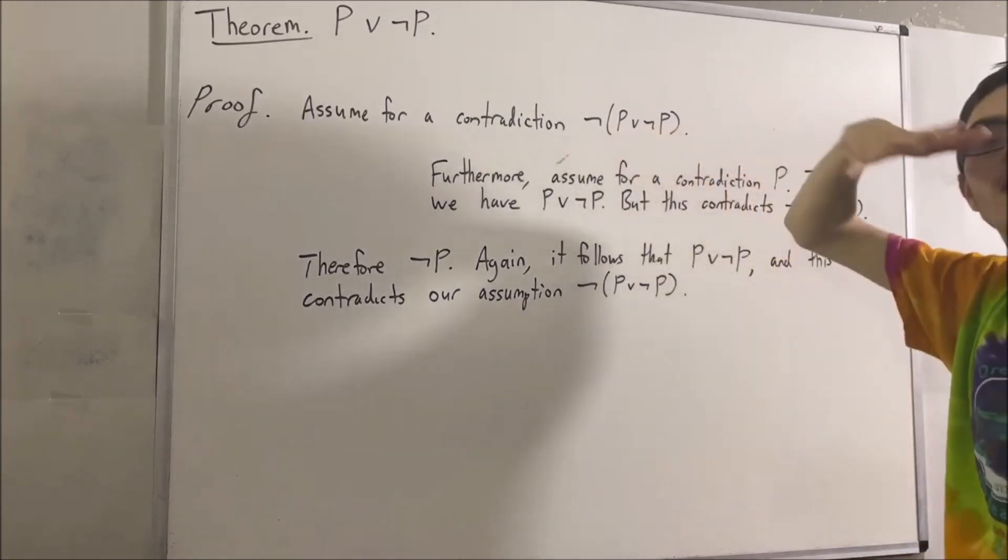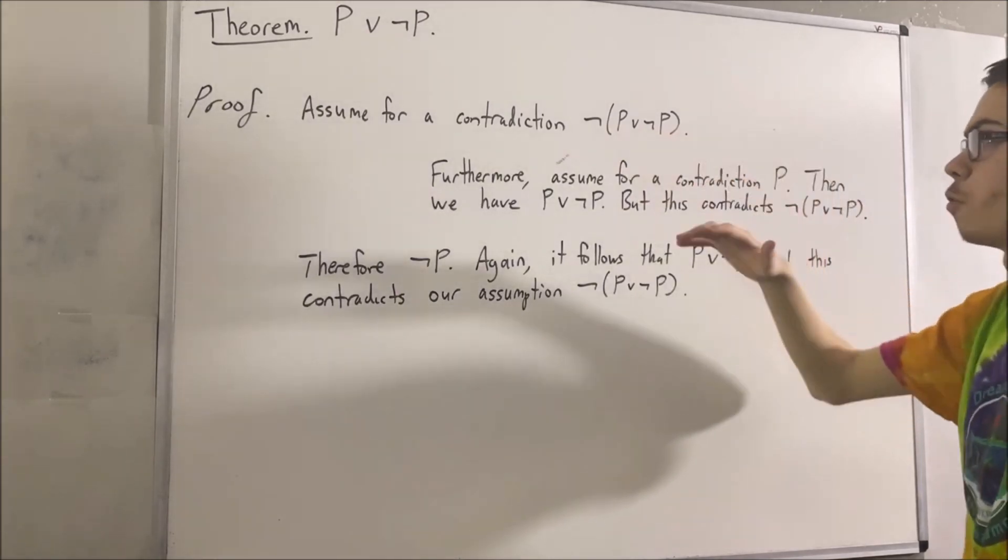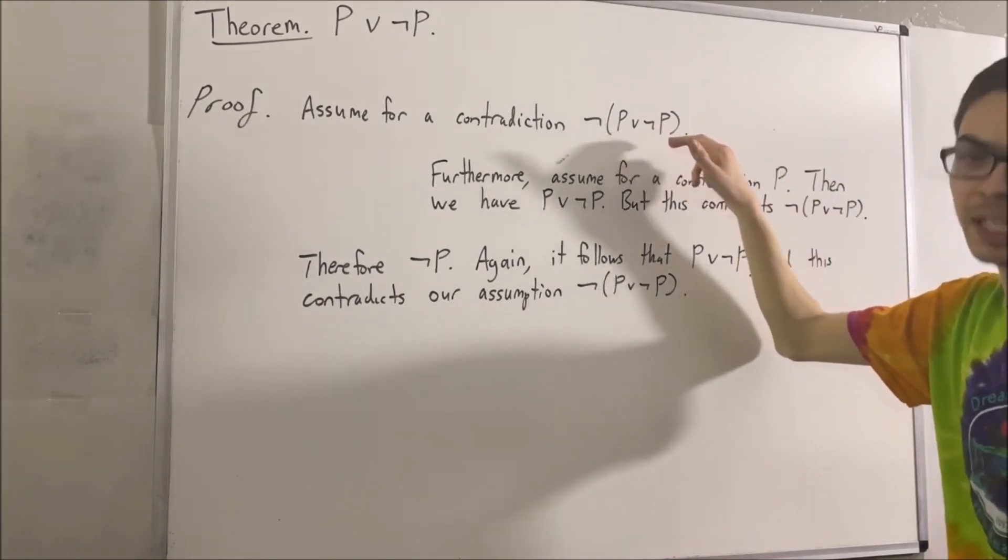Therefore, our assumption that this is true led us to a contradiction. Therefore, we must have instead P or not P is true.